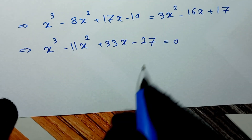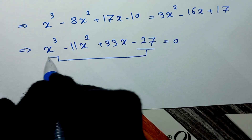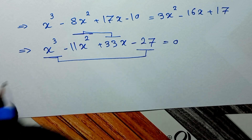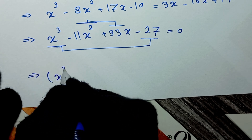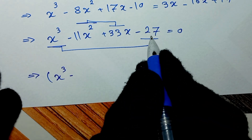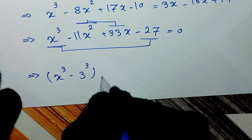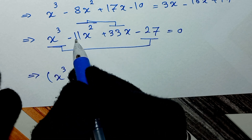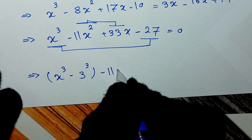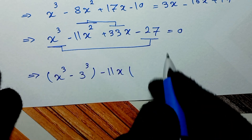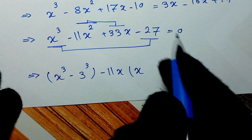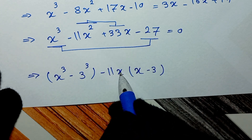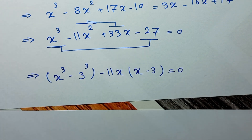In the next step we group terms together. We pair x cubed minus 27, and we can write 27 as 3 to the power of 3. Then we factor negative 11x from the remaining terms: negative 11x squared plus 33x, which gives negative 11x times x minus 3. So we have x cubed minus 3 cubed minus 11x times x minus 3 equals 0.